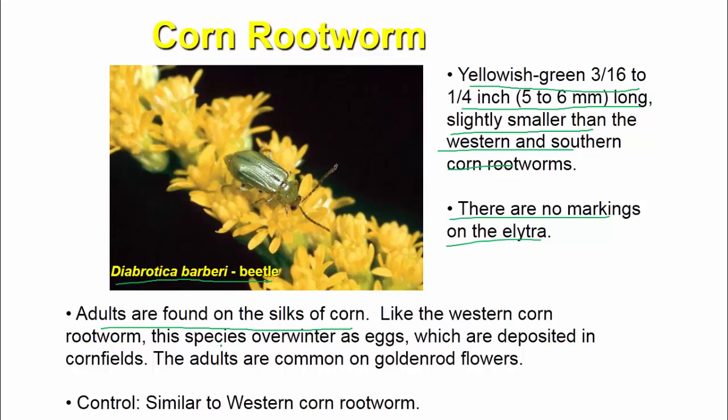Like the western corn rootworm, this species overwinters as eggs, which are deposited in corn fields. The adults feed on golden rod flowers. Control is similar to the western corn rootworm.